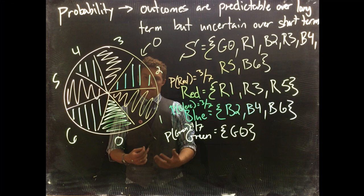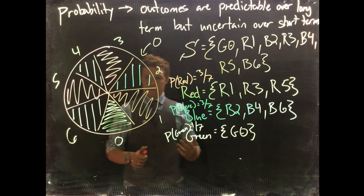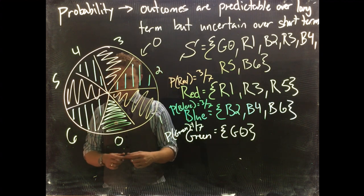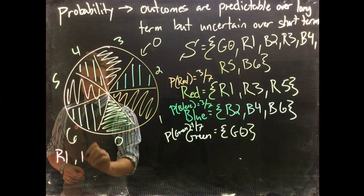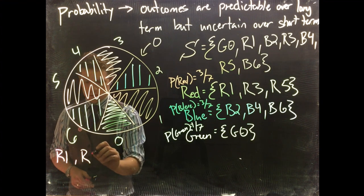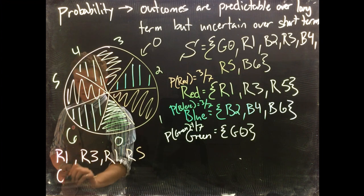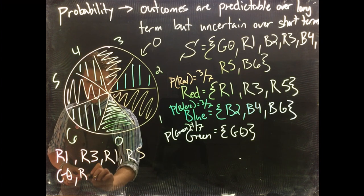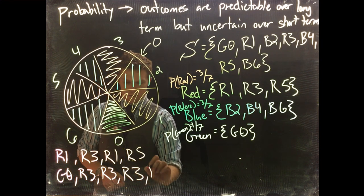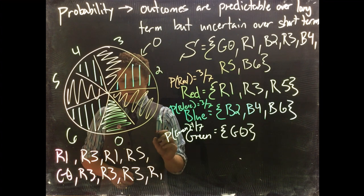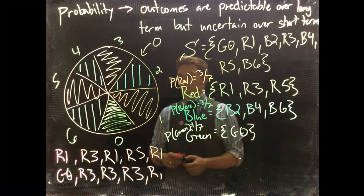Okay, so now let's dive into this idea of the gambler's fallacy. So let's say we are at a specific roulette table and we see that the past 10 spins, we have the following. Okay, so we get red one, red three, red one, red five, green zero, red three, red three, red three, red one, and we'll do red one.